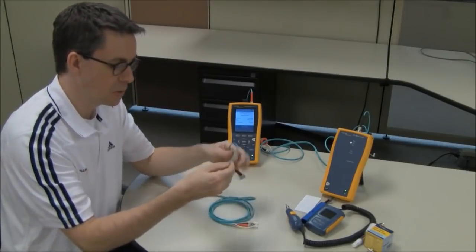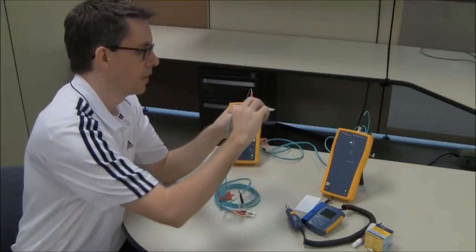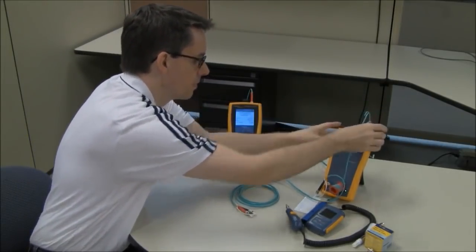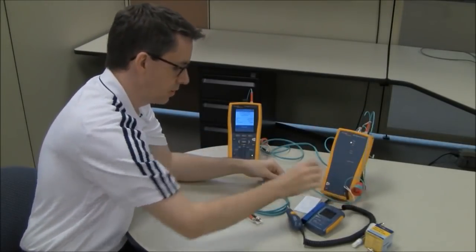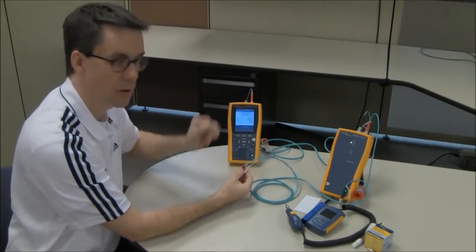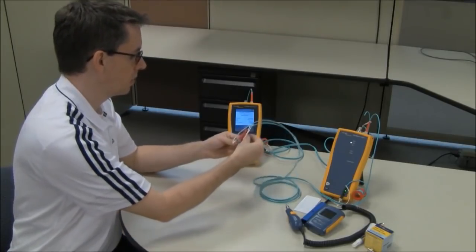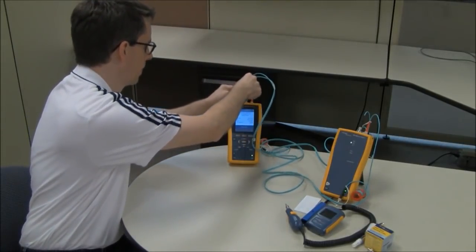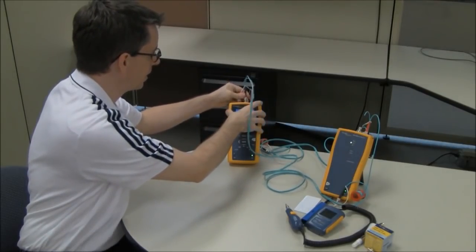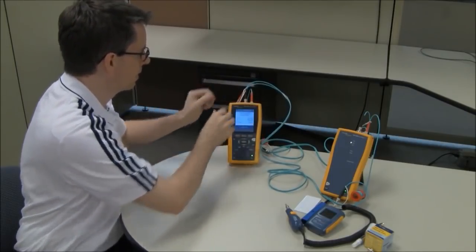I'm then going to take my other test reference cord, which again, I've inspected, made sure everything's clean, connect it to the output port on the remote unit. Again, I've got my mandrel, critical, and connect it to my main unit on the input port. And again, it's got the ST input port on there. So, which one am I going to use? I'm going to use the black one. And that indicates that I got the polarity correct. It's just a question of finding the key, don't force it in, and turn.